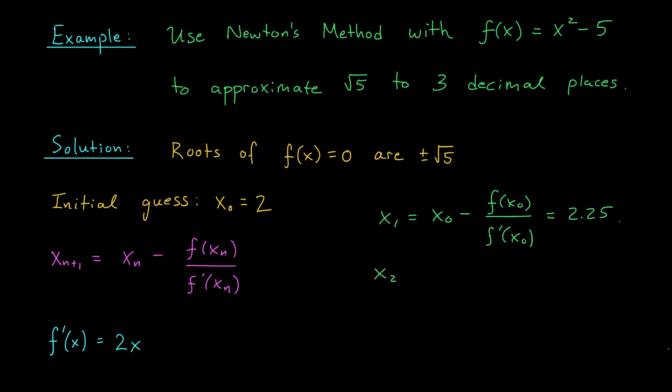The second term similarly is x1 minus f of x1 over f prime of x1. This one's a little uglier, but it's approximately 2.23611. Okay, we got to keep going.